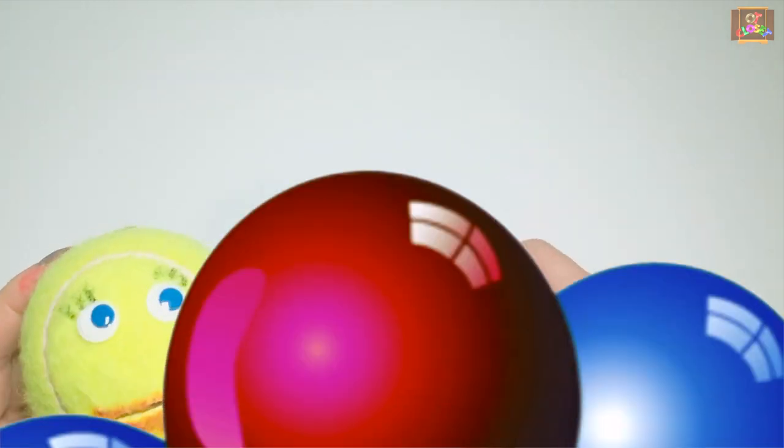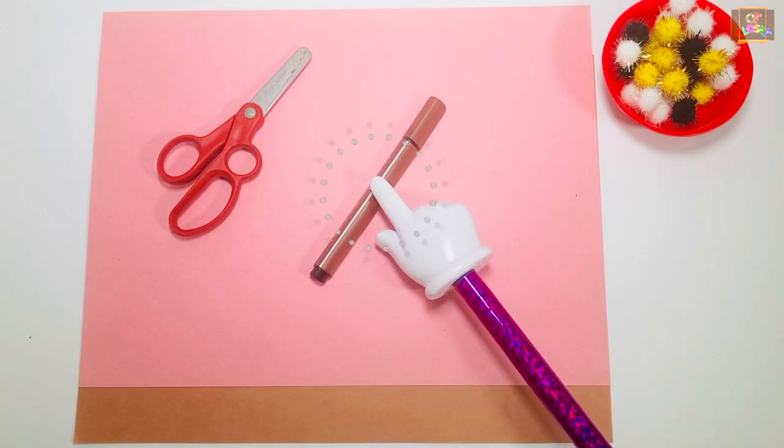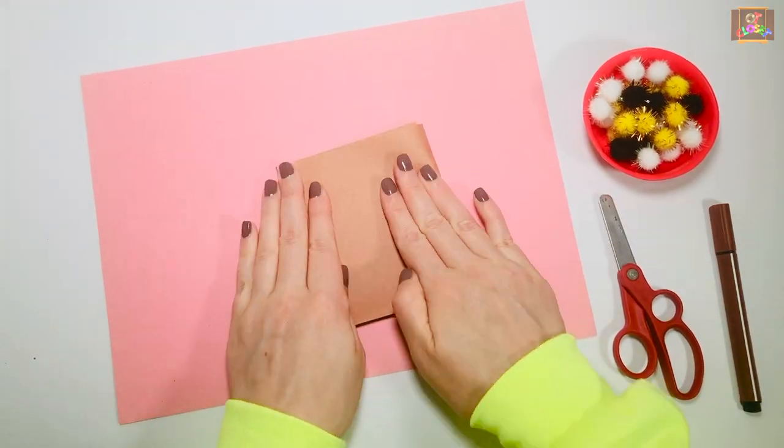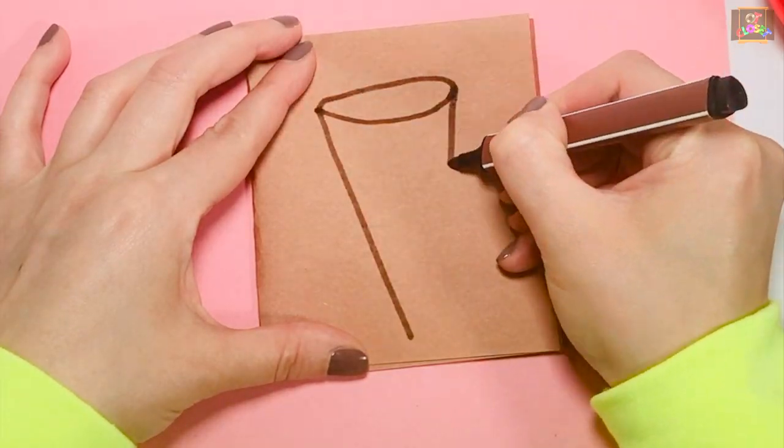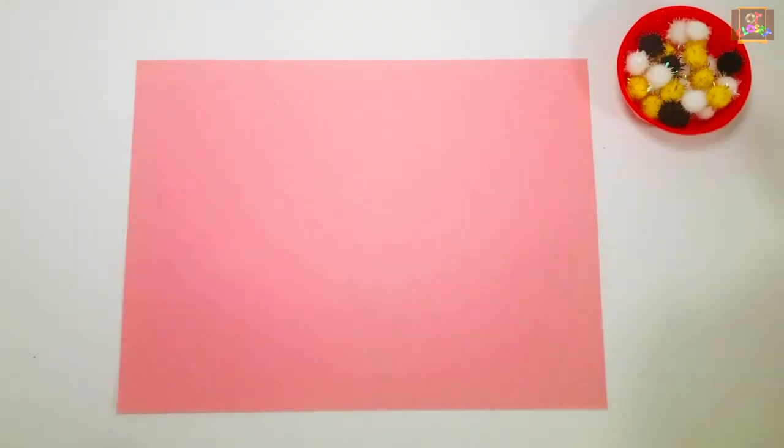How about some ice cream game for activity number two? Get paper, scissors, marker, and pom-poms. Kids can cut the cones out and glue them to the paper.